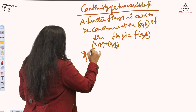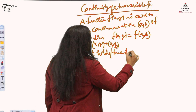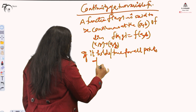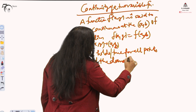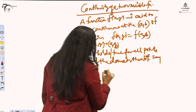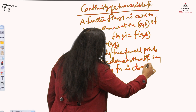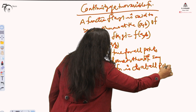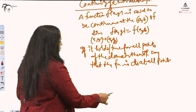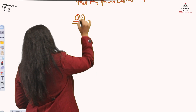If it holds for all points of the domain, then we say that the function is continuous at all points, or the function is continuous in the domain. I will be taking two examples — one continuous and one non-continuous or discontinuous.